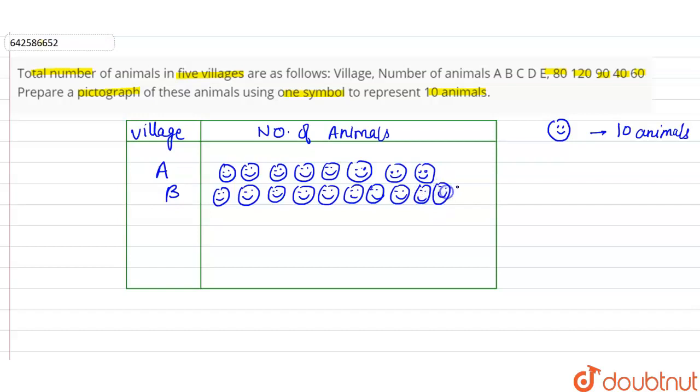So these 12 represent 120 animals. In the third village, in the C village, it's 90, so we have to make 9 symbols: 1, 2, 3, 4, 5, 6, 7, 8, 9. So 9 into 10 is 90.